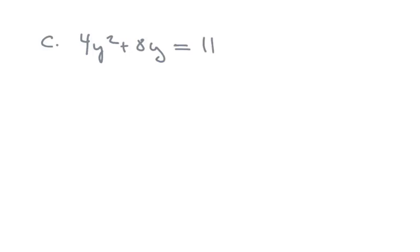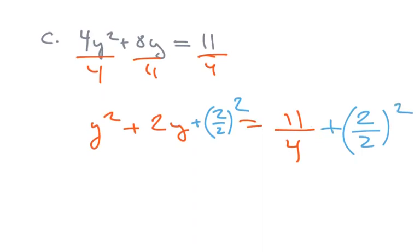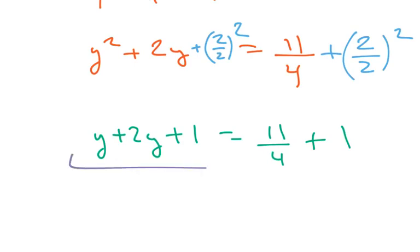More of the same — the next one's interesting because they actually make your life a little easier in the beginning. They already have 11 off to the side. So I'm just going to divide through by 4. We're going to get y squared plus 2y equals 11 over 4. And then I'm going to complete the square, which we know is divide this value by 2 and then square it. And what you do to one side, you've got to do to the other. This becomes y squared plus 2y plus 1 equals 11 over 4 plus 1.